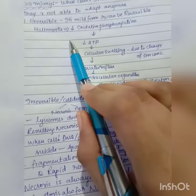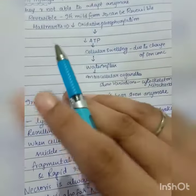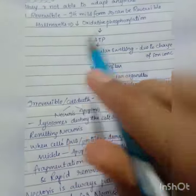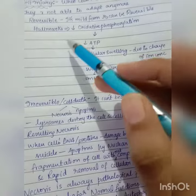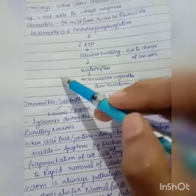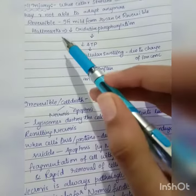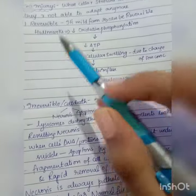But because of this ATP damage, the sodium-potassium pump damages, leading to accumulation of sodium inside the cell. When sodium accumulates inside the cell, water follows the sodium, so water also accumulates along with the sodium.